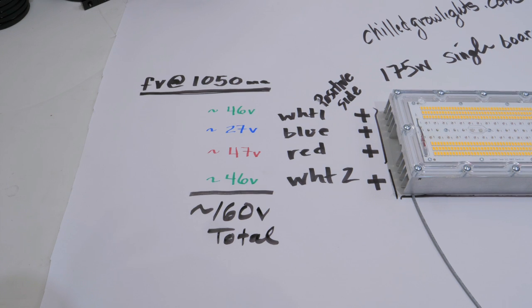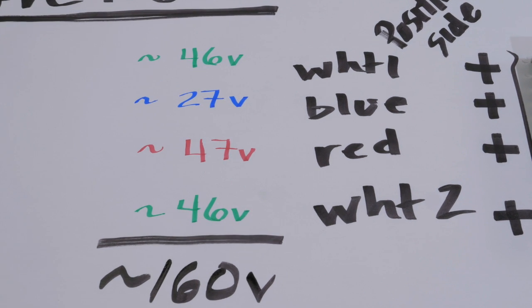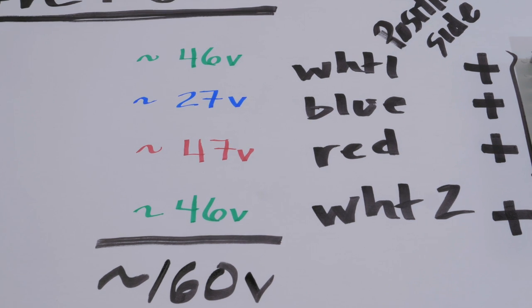You do have the option of going to Chilled Grow Lights and buying their complete kit, which includes the driver, the heat sink, and all that stuff. You would wire all four channels in series at 165 volts, you'd plug in the driver, you'd have a set spectrum, and you'd be good to go.